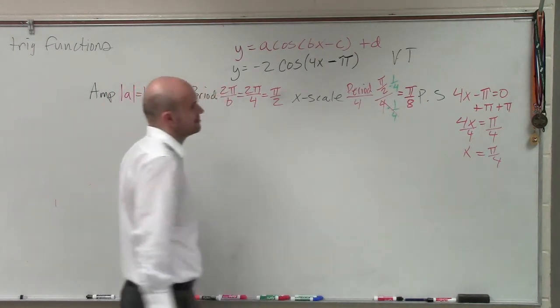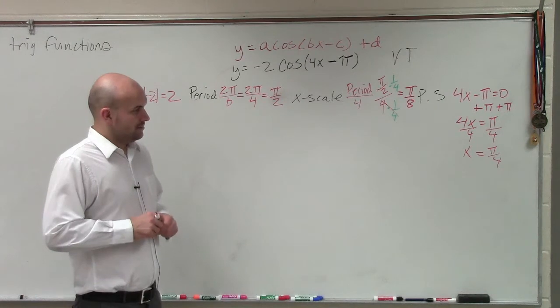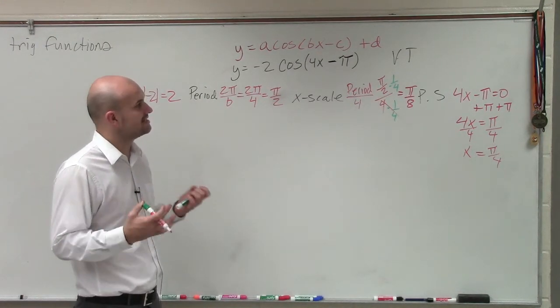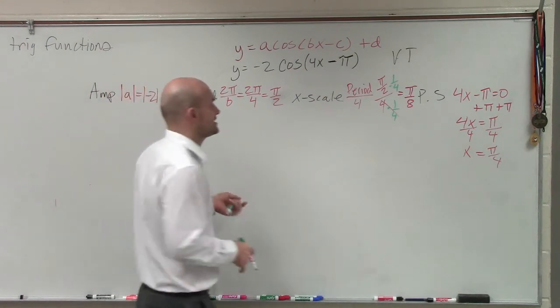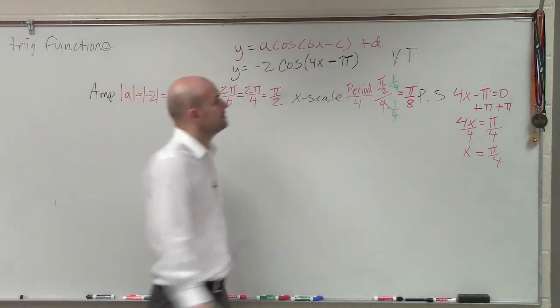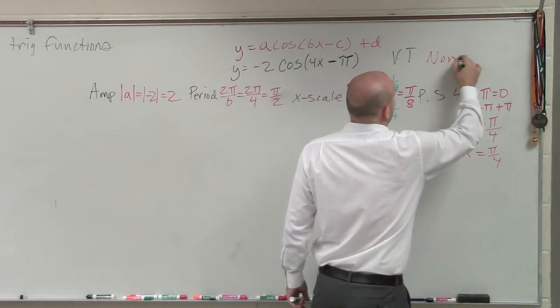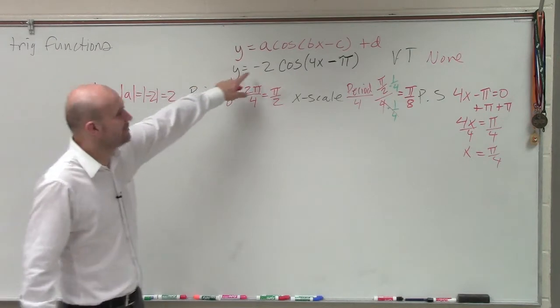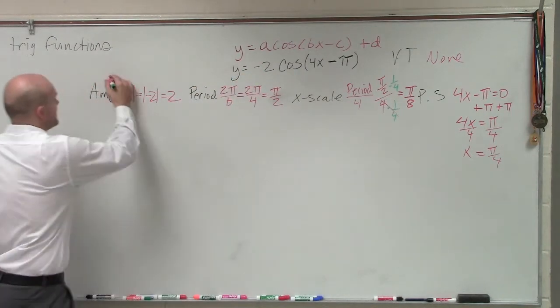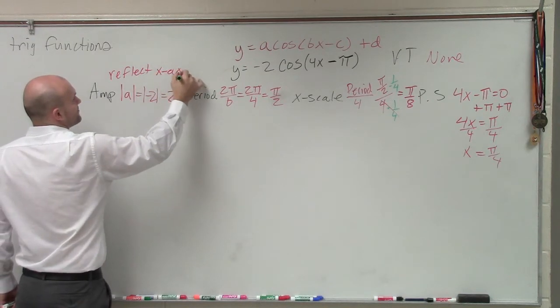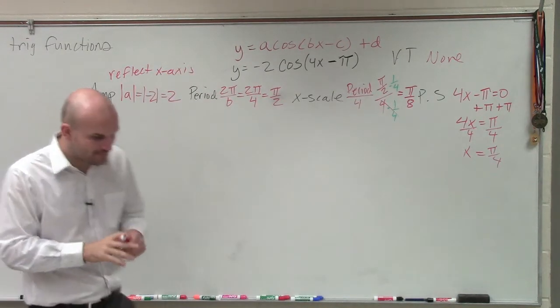So the last thing, guys, is we have a vertical translation. Are we shifting? Are we adding or subtracting anything outside the function? No. So that's going to be none. However, we do have a reflection, right? We have our a is negative. So therefore, that's going to tell us to reflect the x-axis.